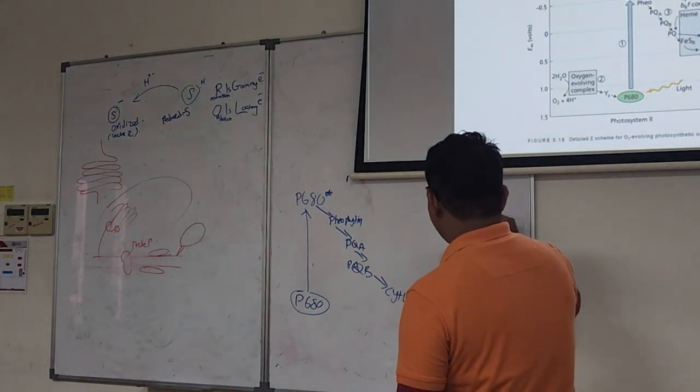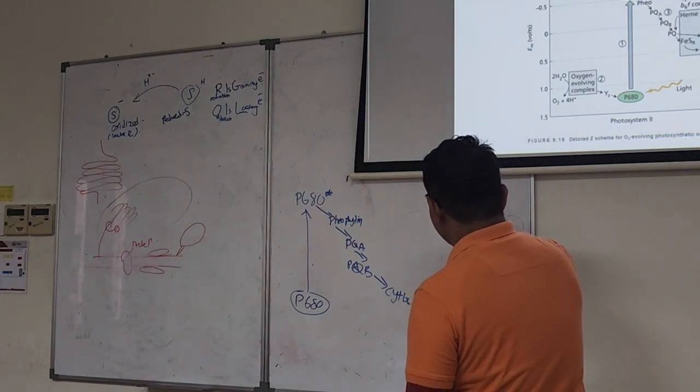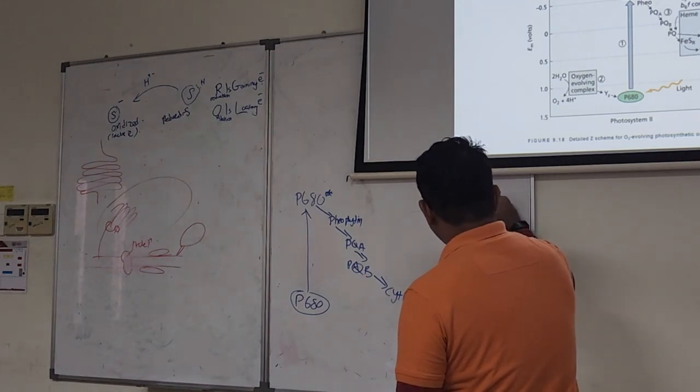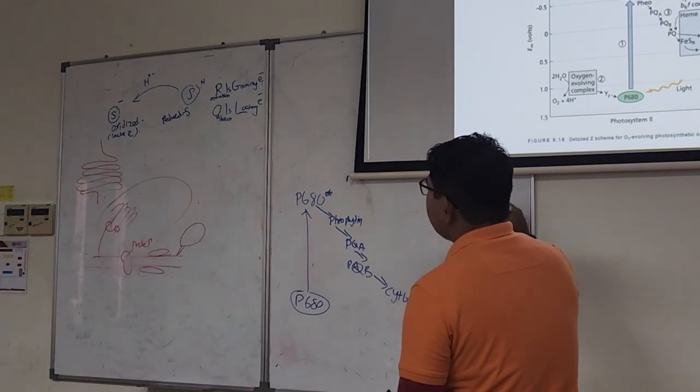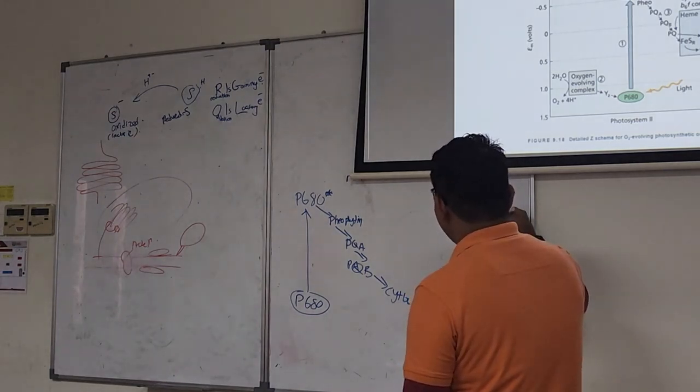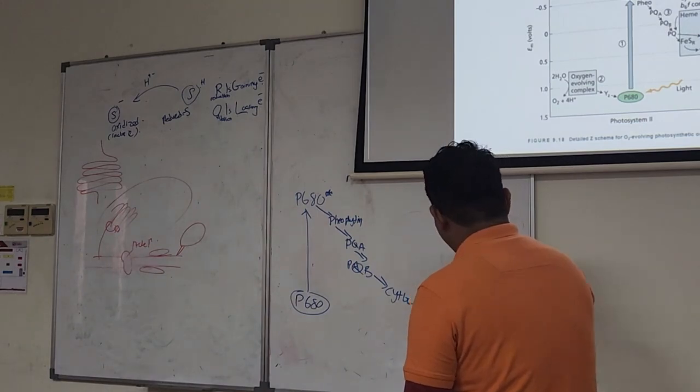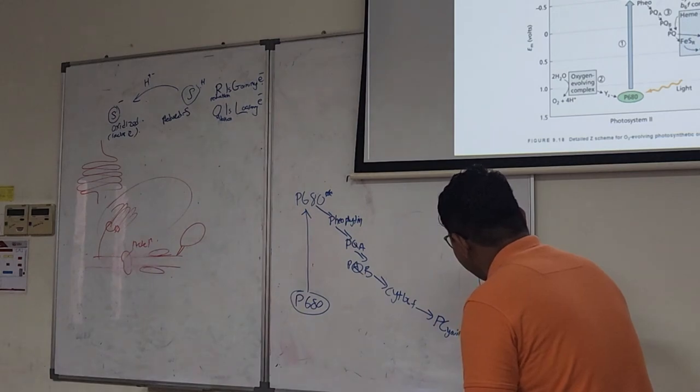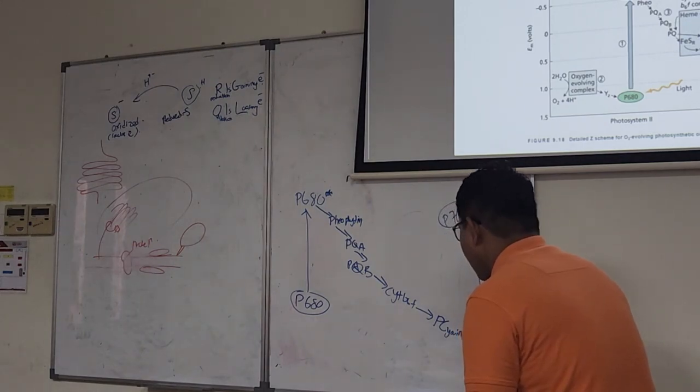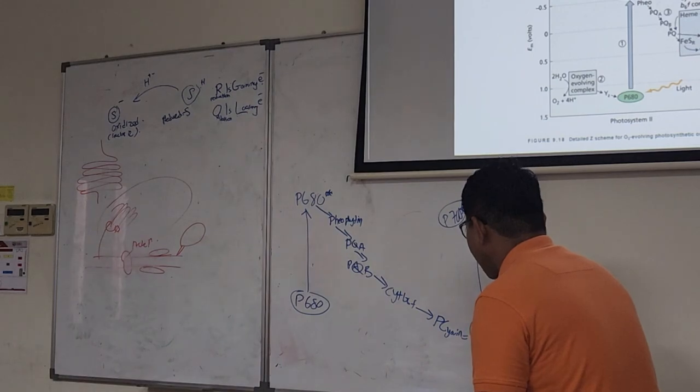Then you're going to go up to P700 star. And then you will go to A0. This is actually chlorophyll, but we call it A0. Then we go to A1. Then you go to iron sulfur X. Then you go to iron sulfur A. Then you go to iron sulfur B. Then you go to ferredoxin. Then you go to flavoprotein ferredoxin NADP plus reductase. Then you go to NADP plus.